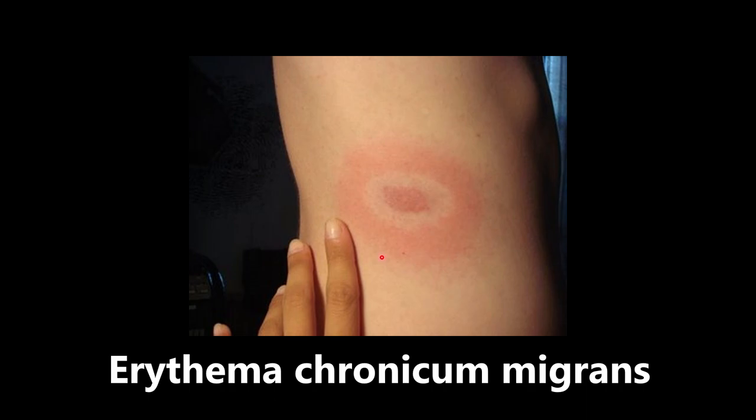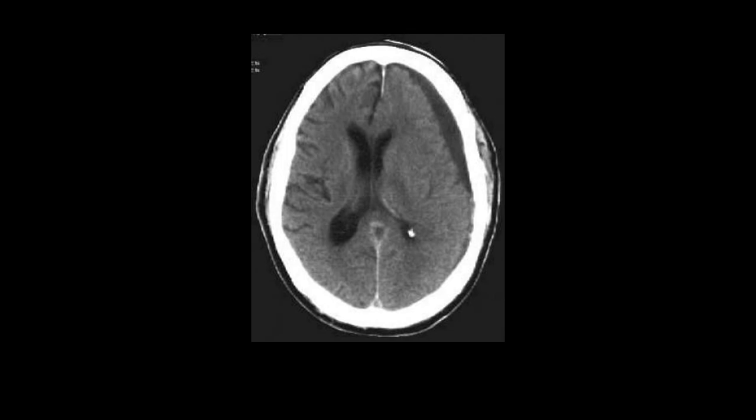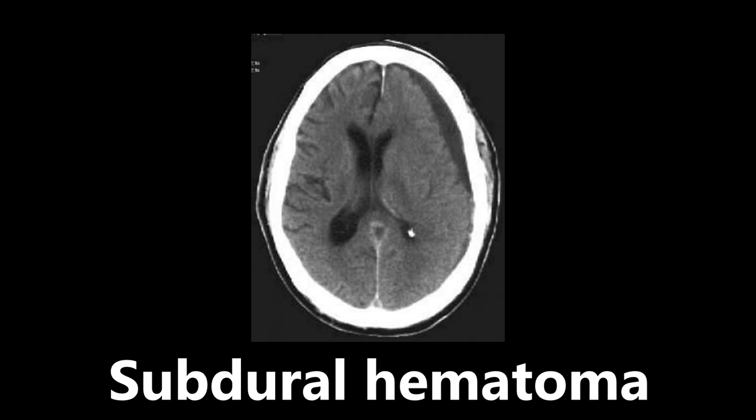This next image shows a CT scan with an abnormality that we need to identify. This is a classic subdural hematoma. Remember: the subdural hematoma is crescent-shaped, caused by a rupture of cortical bridging veins. It can cross suture lines, and it can cause midline shift. Very, very high yield to know all of that information — crescent-shaped, rupture of cortical bridging veins, can cross suture lines, can cause midline shift.